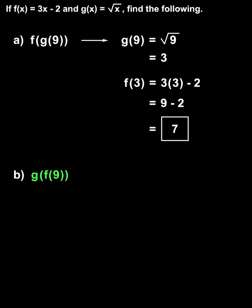Next, to find g of f of 9, we first find f of 9. Since f of x equals 3x minus 2, we find f of 9 by substituting a 9 in for the x in the function, to get f of 9 equals 3 times 9 minus 2, which simplifies to 27 minus 2, or 25. So f of 9 equals 25.